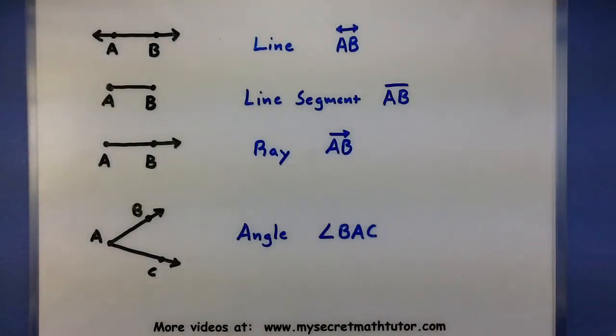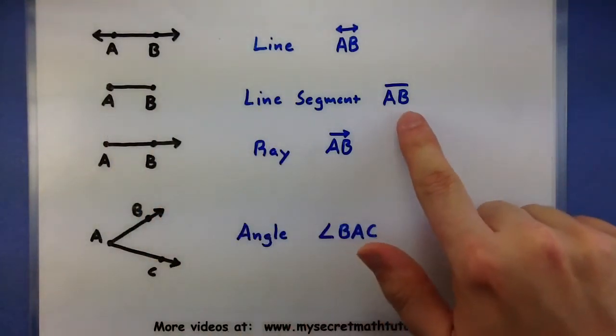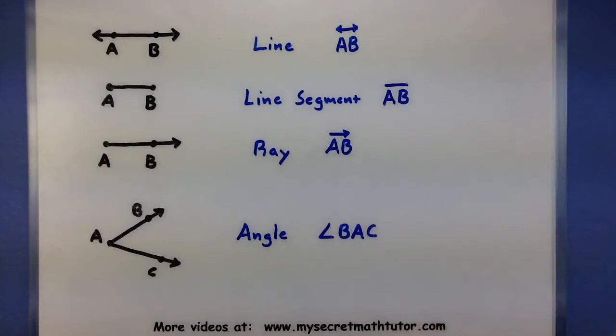A line segment, we chop it off at A and B so it no longer extends out in both directions. Again, we identify it using those two points, A and B, and we just use a line segment so we don't put those little arrows on it.